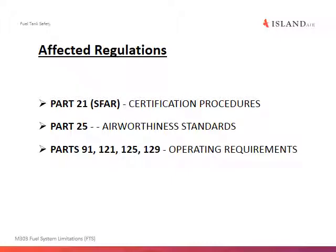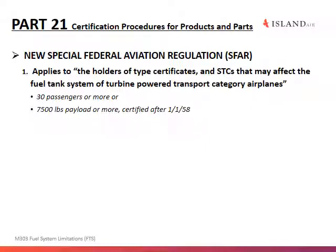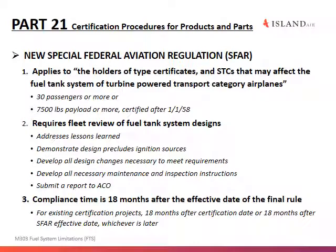The affected regulations include Part 21, which covers certification; Part 25, which addresses airworthiness standards; and Parts 91, 121, 125, and 129, which are all operating requirements for operators of those types of aircraft. Part 21 outlines certification procedures needed for an aircraft to be certified. Examples of aircraft models include the ATR 72 and the Bombardier Dash 8.